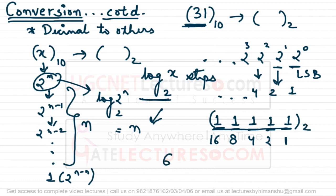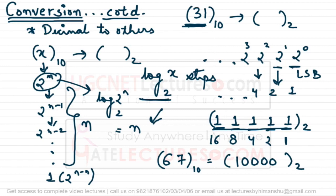So the binary representation of 31 is 11111. Now try it yourself: represent 67 in binary using this shortcut. The highest power of 2 less than 67 is 64. Subtract 64 from 67 to get 3. The highest power less than 3 is 2, leaving 1. So the binary representation is 1000011 — that is, 1 for 64, 0 for 32, 0 for 16, 0 for 8, 0 for 4, 1 for 2, and 1 for 1. Indeed, 64 plus 2 plus 1 equals 67.